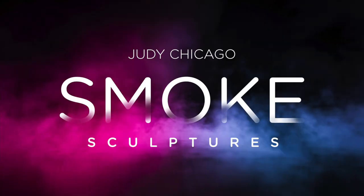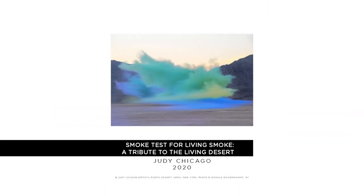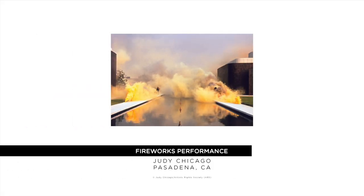In Judy Chicago's latest work, she wanted to feminize and soften the landscape. She ignited colors, smokes, and various locations to create images which augmented the reality of the land. She would create art on the land and leave no trace behind except photographs.